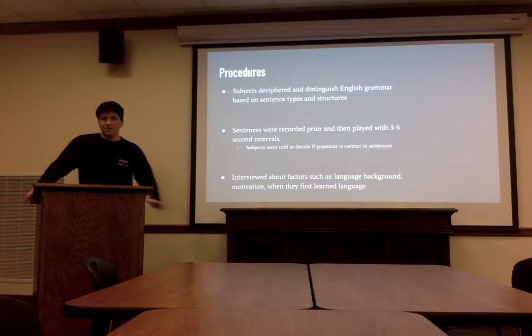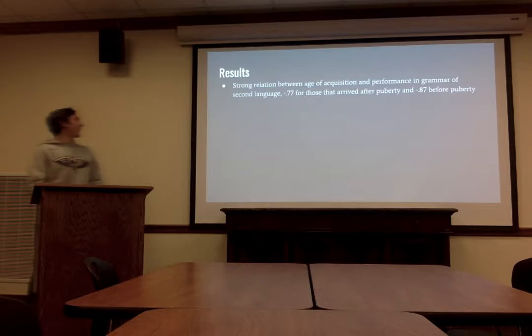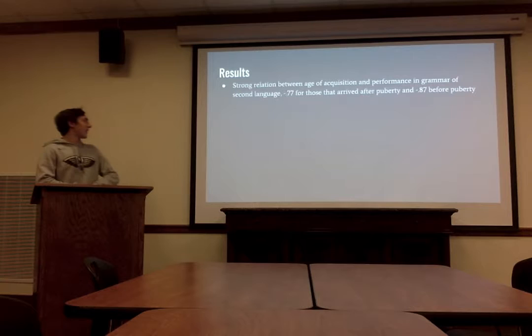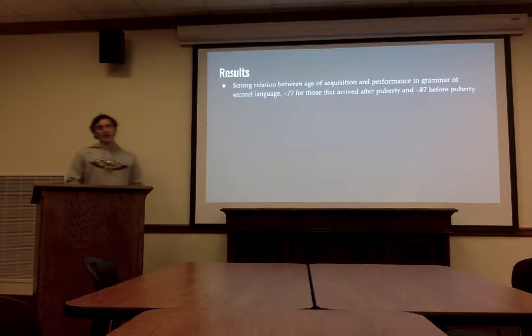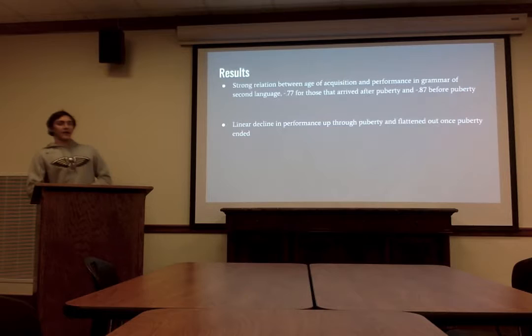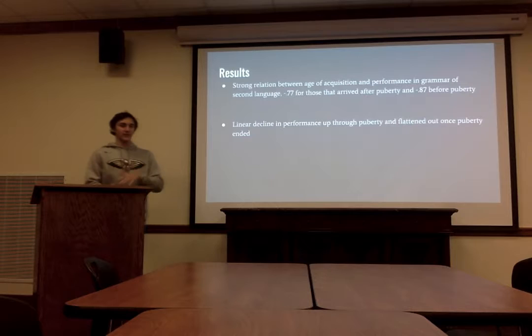The results showed a strong correlation between age of acquisition and grammar performance. The correlation numbers were negative 0.77 for those who arrived after puberty and negative 0.87 for those who arrived before puberty, showing that those who arrived before puberty performed significantly better. When plotted, there was a linear decline in performance as age increased, and once puberty ended, performance flattened out and stayed the same throughout the years.